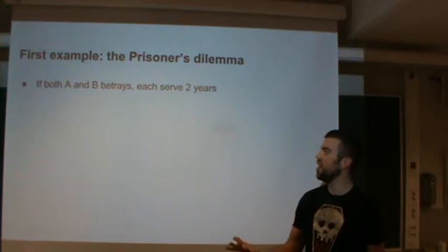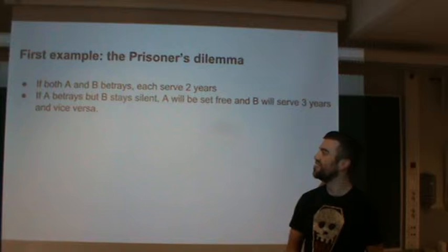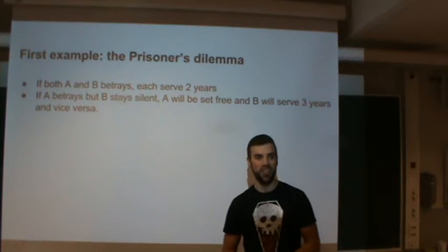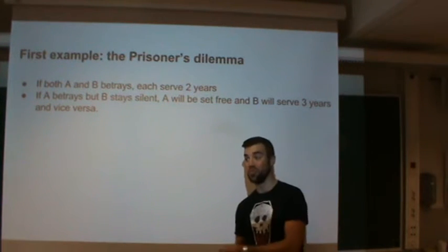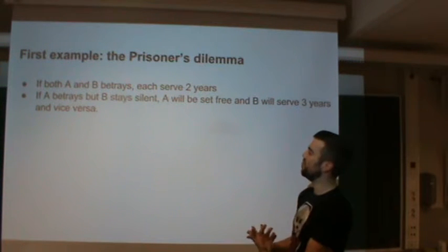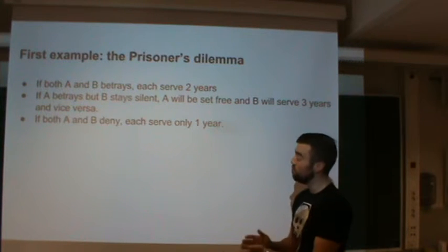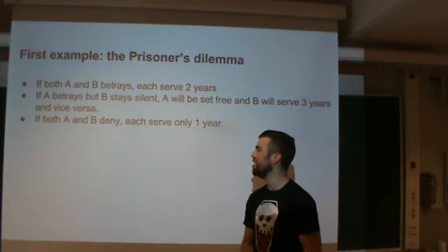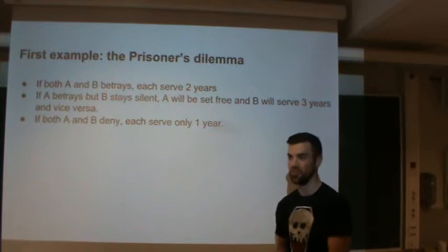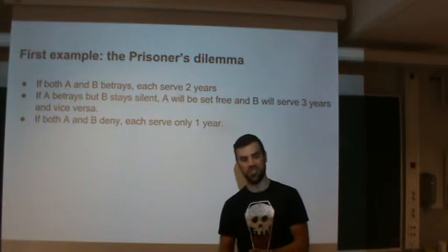The possible scenarios are: both A and B betray each other — two years each. A betrays B but B stays silent — one cooperates and one defects — resulting in zero years for A and three years for B. The last scenario is when both A and B deny, so they cannot be charged with the principal crime and only get one year each.